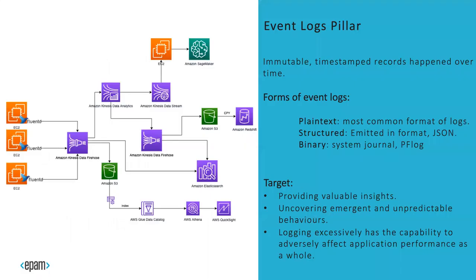To understand observability, we need to understand its three pillars. The first pillar is event logs. An event is some sort of immutable data structure — a timestamped record that happened over time. When we deliver a solution, we write logs to a log aggregator or save them to disk; it's an immutable event that cannot be changed once recorded. Events can have different formats: plain text, structured, or binary. More structured events are easier to analyze. Binary format can be used for more tracing — for example, in pfSense firewall logs.